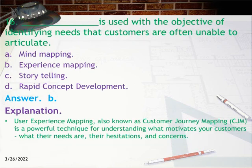Question 16: Which is used with the objective of identifying needs that customers are often unable to articulate? A) Mind mapping, B) Experience mapping, C) Storytelling, D) Rapid concept development. Answer B. Explanation: User experience mapping, also known as customer journey mapping (CJM), is a powerful technique for understanding what motivates your customers, what their needs are, their hesitations, and concerns.